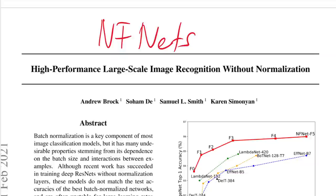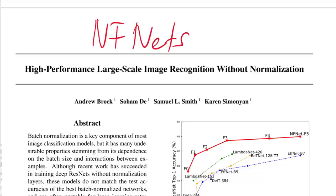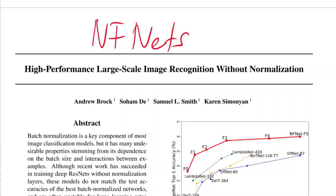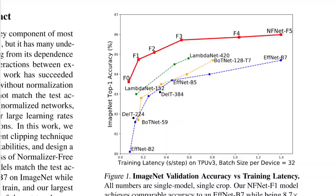The point of this paper is to build networks — specifically convolutional residual-style networks — that have no batch normalization built in. Without batch normalization, these networks usually perform not as well or cannot scale to larger batch sizes. However, this paper builds networks that can scale to large batch sizes and are more efficient than previous state-of-the-art methods.